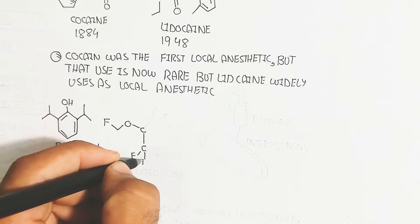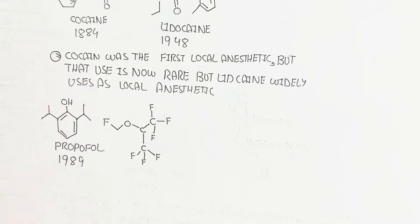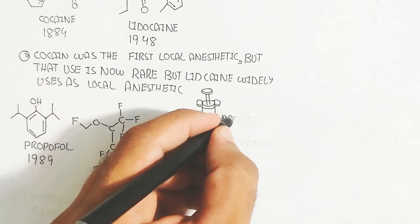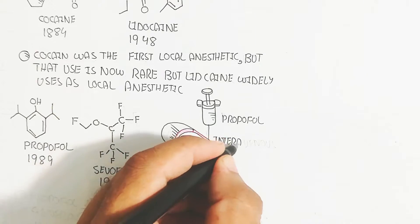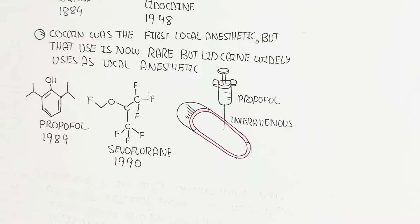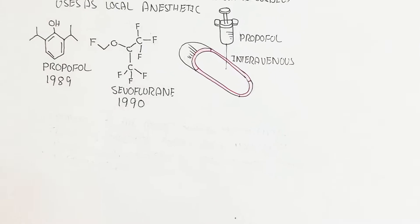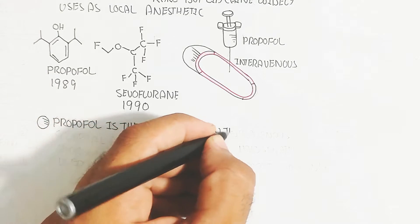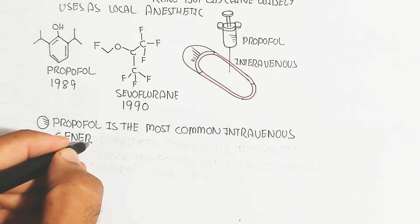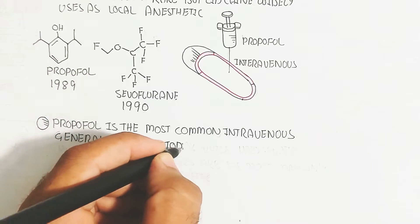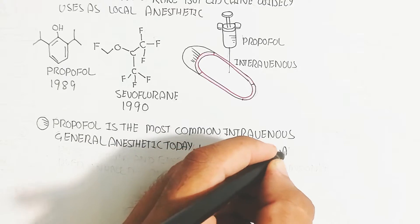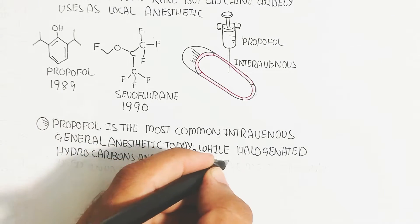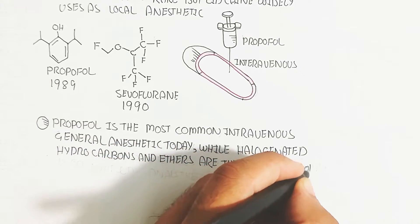Propofol was introduced in 1989, and sevoflurane was introduced in 1990. Propofol is an intravenous anesthetic that is transfused into the blood circulatory system, leading to unconsciousness. Propofol is the most common intravenous general anesthetic used today, while halogenated hydrocarbons and ethers are the most commonly used inhaled anesthetics.